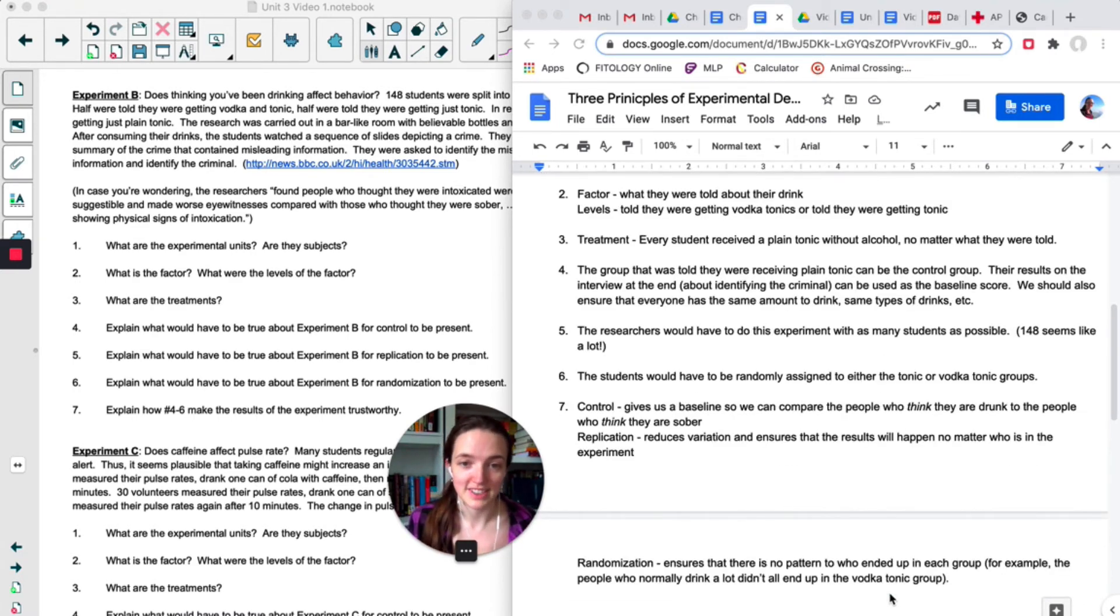Number seven is really important. This is why we do each of these things, why they make the results of the experiment trustworthy. Control gives us a baseline so that we can compare the two groups, but it also ensures that the bias due to a lurking variable is as small as possible. Replication reduces the variation between the participants and ensures that our results will happen no matter who is in the experiment. And then randomization ensures that there's no pattern to who ended up in each group. So here's an example of what would be bad if all the people who normally drink a lot didn't end up in the vodka tonic group. That might be a source of bias.